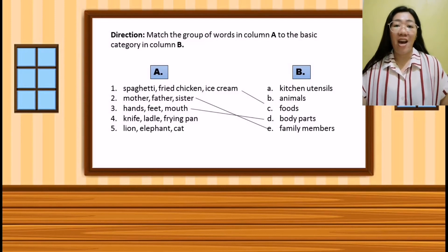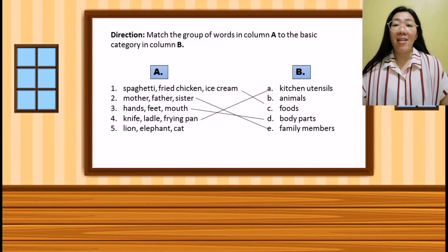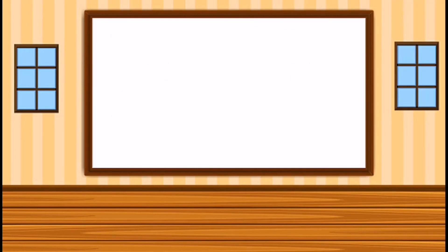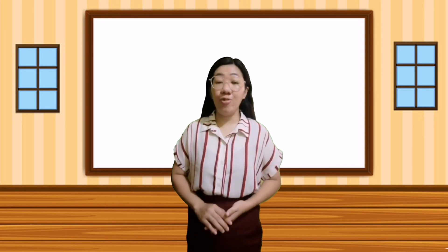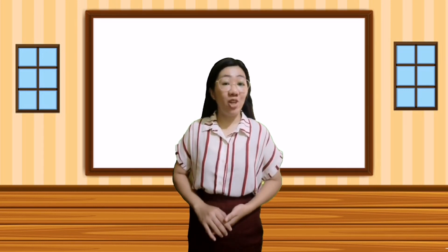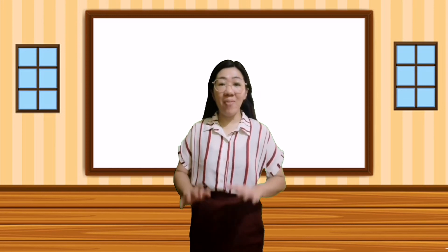Next, knife, ladle, frying pan — they are kitchen utensils. And the last group of words are lion, elephant, and cat — they are animals. And that is the end of our discussion for today. I hope you have learned something. Thank you very much. Till next time. Bye-bye, kids.